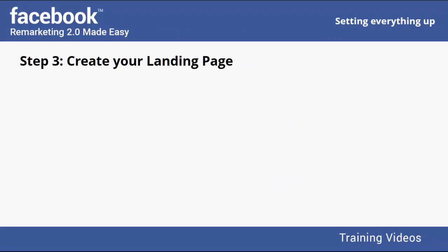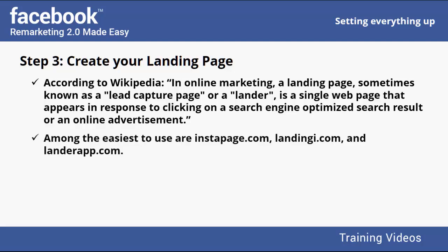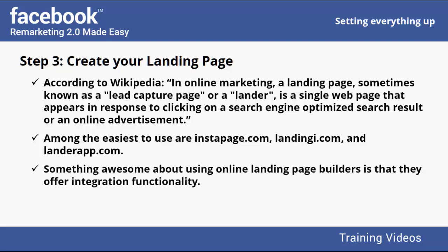Step 3: Create your Landing Page. You need a landing page for the opt-in form your autoresponder provides and for your Lead Magnet. According to Wikipedia, a landing page — sometimes known as a Lead Capture Page or Lander — is a single webpage that appears in response to clicking on a search result or online advertisement. Among the easiest landing page builders to use are Instapage.com, LandingGI.com, and LanderApp.com. These services offer integration functionality, so you can connect your autoresponder without dealing with complicated opt-in code.